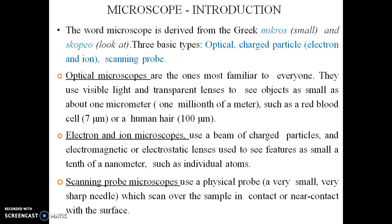Electron and ion microscopes use a beam of charged particles. Scanning probe microscopes use a physical probe that can scan over the sample in contact or near contact with the surface.